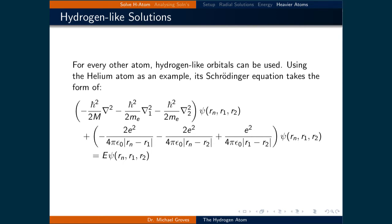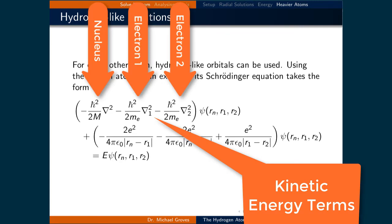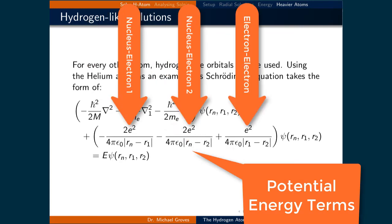In the first part of this equation we have three kinetic energy terms, one for the nucleus and one for each electron. In the potential energy part of the equation there are also three terms: an electron-electron interaction term as well as two electron-nucleus terms, one for each electron.